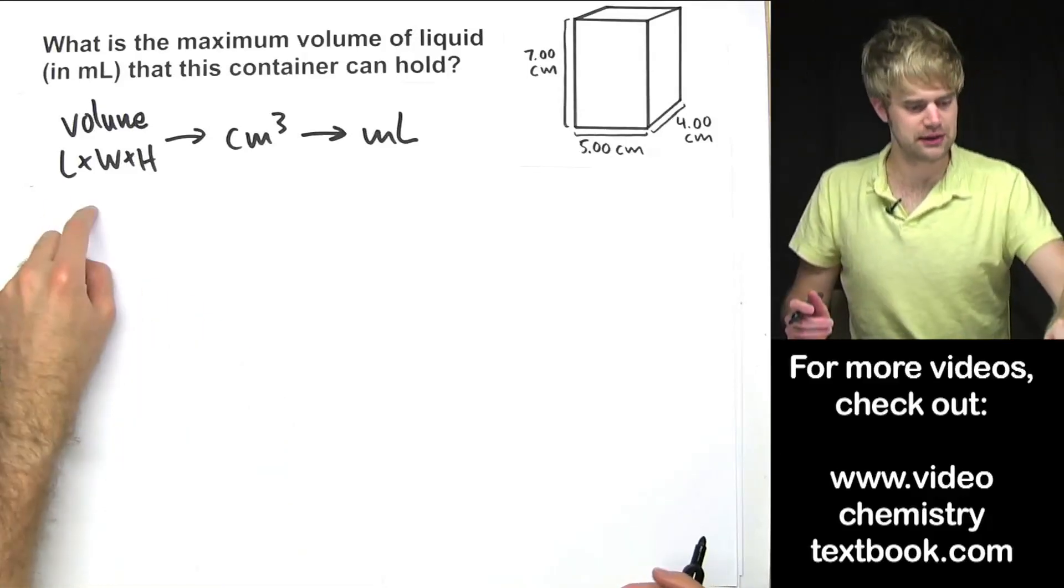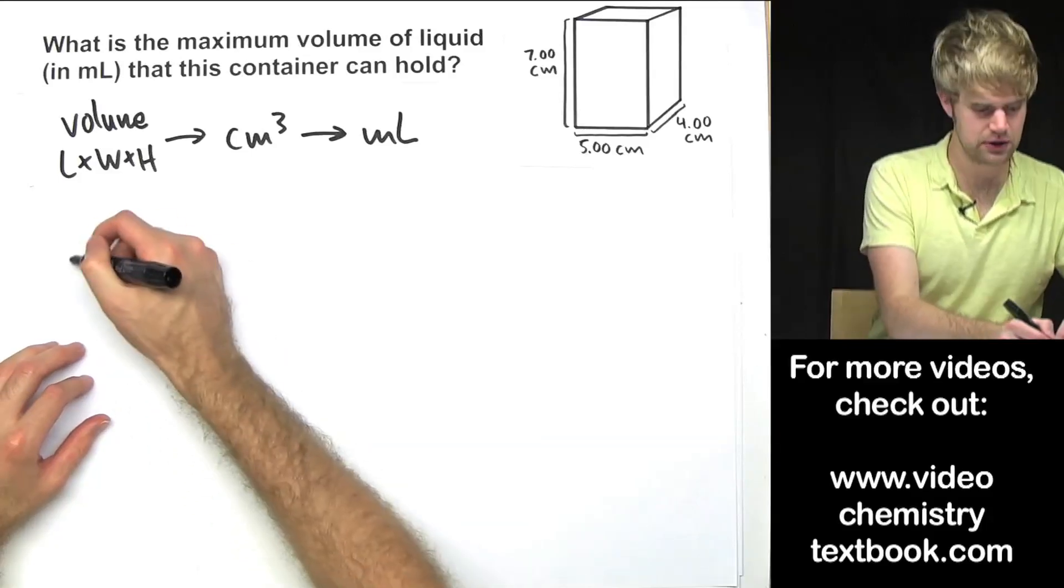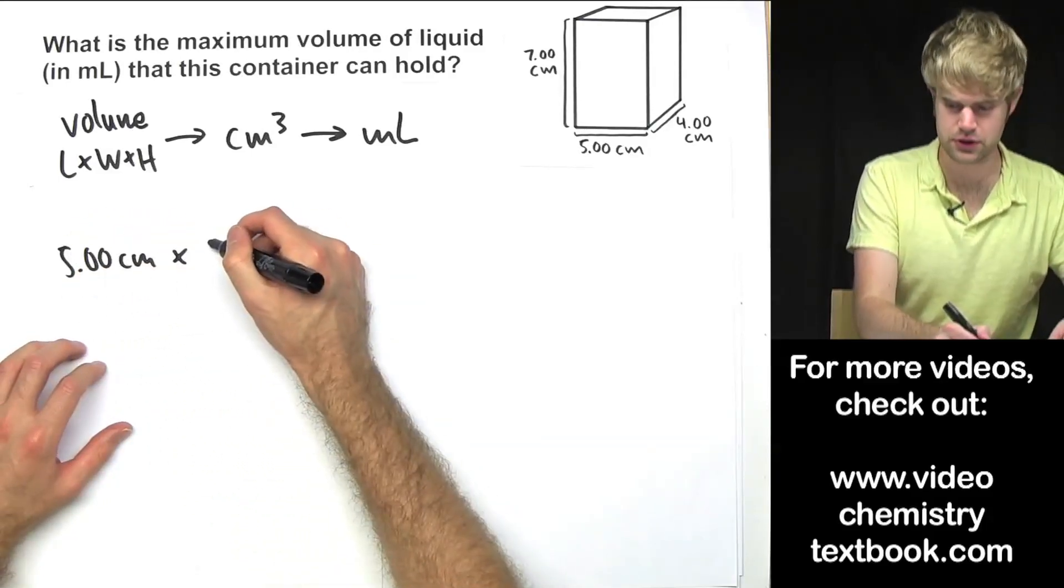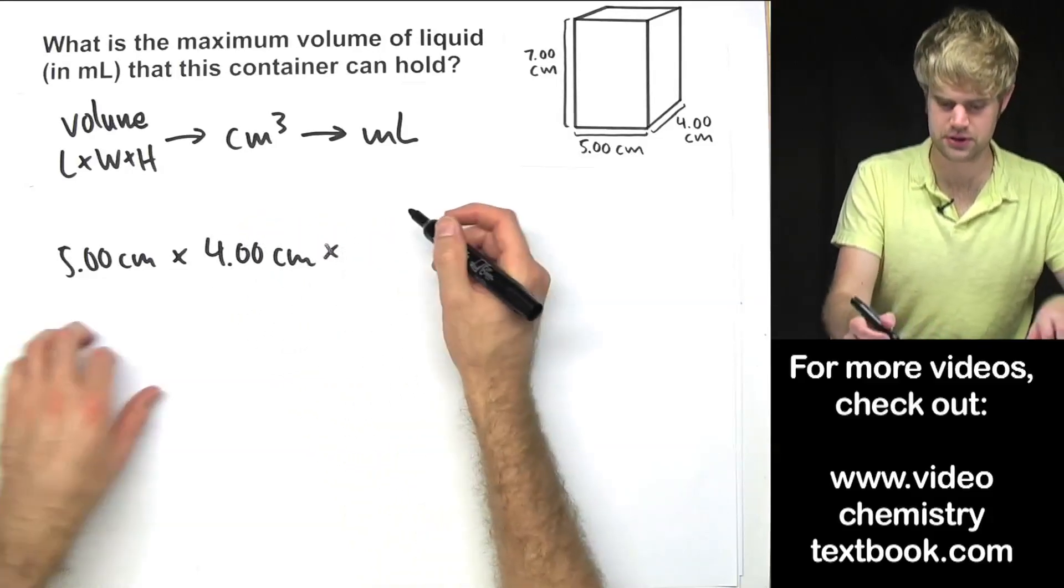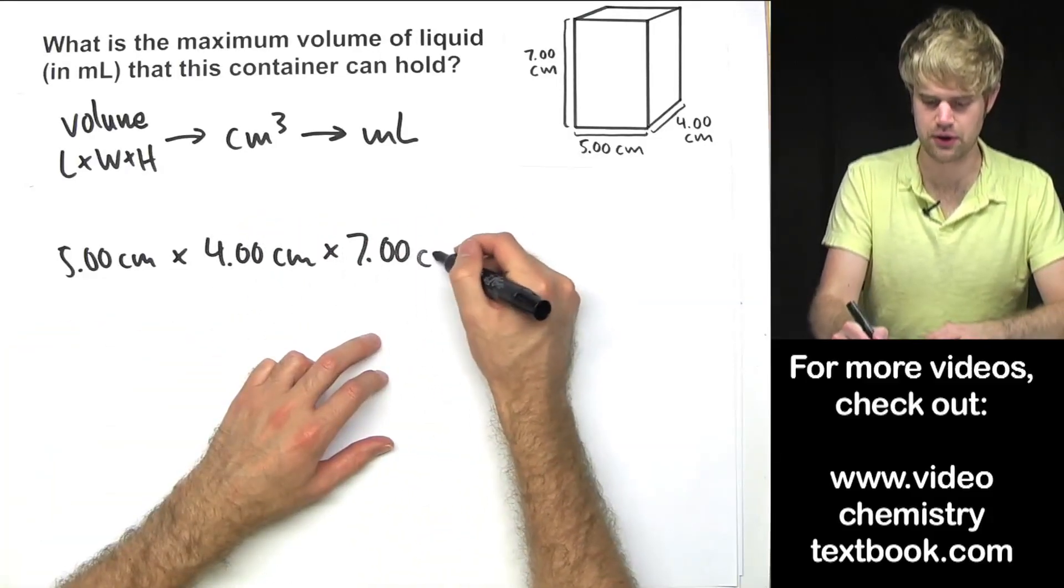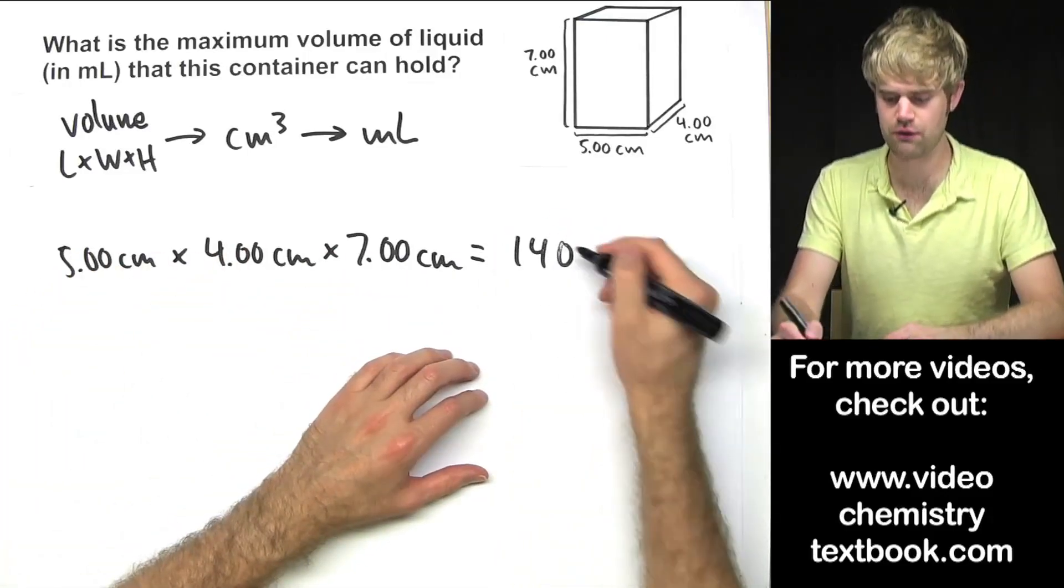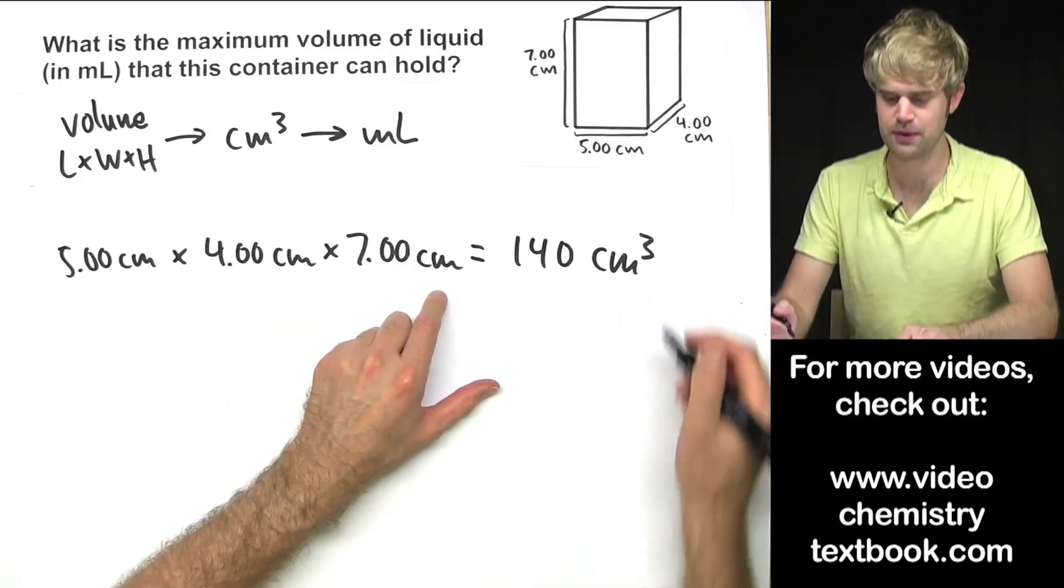So step by step, let's get the volume first. So volume is going to be length, 5.00 centimeters, times width, 4.00 centimeters, times height, 7.00 centimeters. Multiply these three things together and get 140 cubic centimeters.